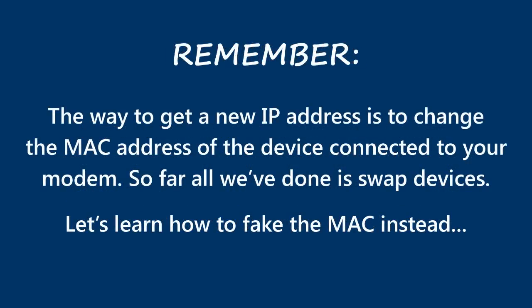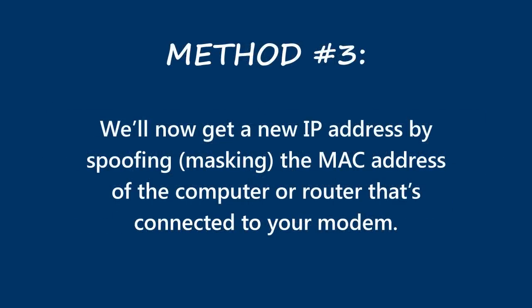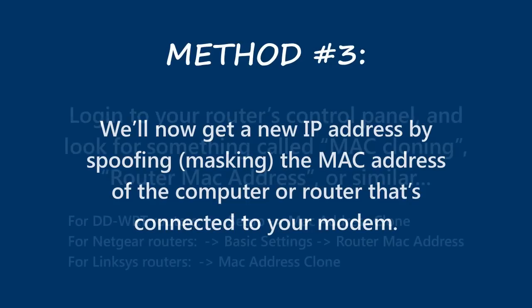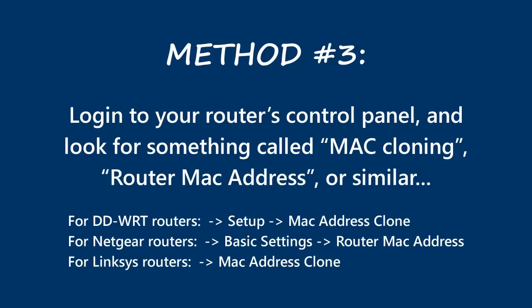Remember that the way to get a new IP address issued from your ISP is to change the physical device or the MAC address of the device connected to your modem. In these first two approaches, we've simply changed the actual physical device, but let's talk about how to spoof the MAC address in order to get a new IP. This would basically fool your modem into thinking you've changed the device, when in fact all you've done is changed its identifying MAC address. So if you have a router, log into your router's control panel and search for something called MAC cloning or router MAC address.